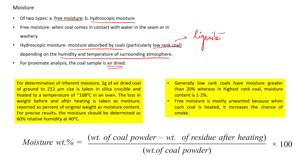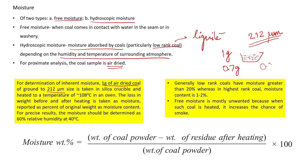This sample is air dried. We first crush the coal and then pass it through sieve sets to get a size fraction of 212 microns, which is used for proximate analysis. For the determination of inherent moisture, 1 gram of air-dried coal ground to 212 microns is taken in a silica crucible and heated at 108 degrees Celsius in an oven for approximately 45 minutes. For example, if we took 1 gram of coal and after heating the weight came out to be 0.7 grams, the coal sample had 30 percent moisture.